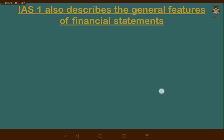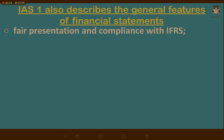IAS 1 also describes the general features of financial statements. They must be fair, comply with IFRS, and contain no material misstatements or hidden significant facts. Financial statements should also be presented on a going concern basis — the assumption that the company will continue for the foreseeable future. Based on this assumption, you depreciate fixed assets rather than expensing them immediately, distributing the cost over time because you know the business will continue generating profits from those assets.